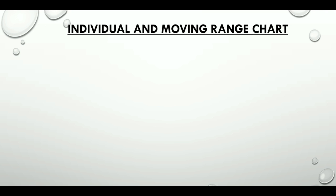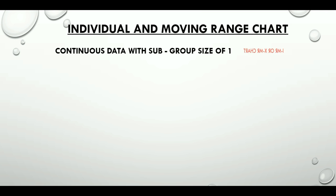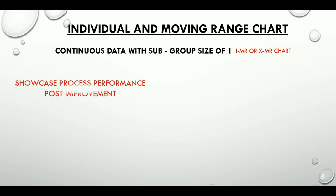We use this chart when subgroup size is 1, where data are collected as individual observations. Popularly known as IMR or XMR chart. If we have larger sample sizes, we get more sensitive charts. Then why do we go for a sample size of 1? The answer is we use a sample size of 1 for very slow processes or where it is very expensive to obtain measurements — for example, some kind of destructive tests.